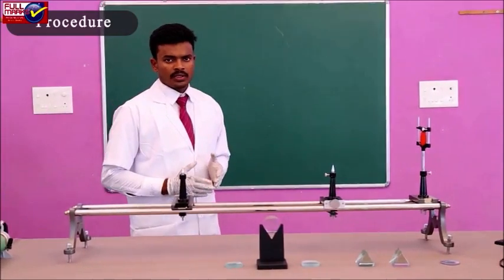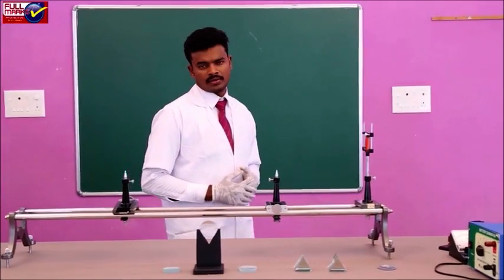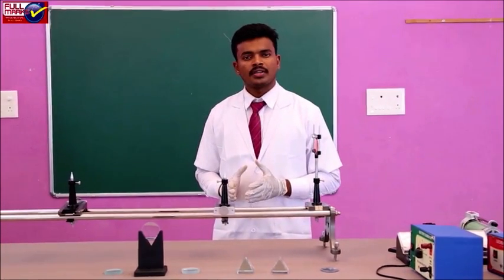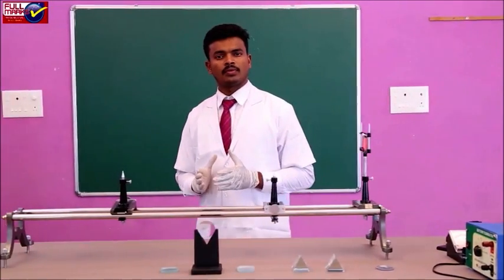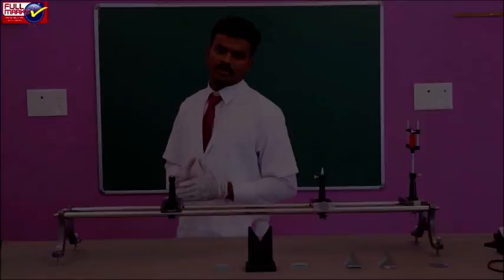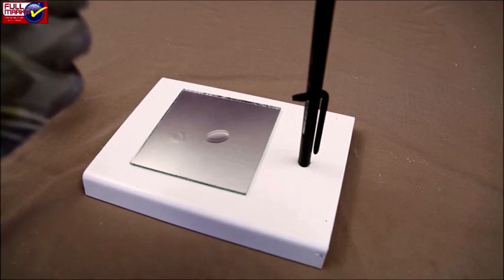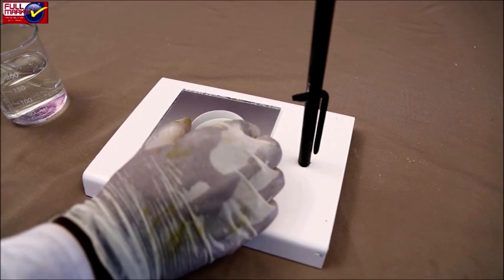Procedure: When a convex lens is placed on a plane mirror with its axis normal to the mirror, object and image formed both will be at the principal focus of the lens. When a liquid is put between the lens and the mirror, it forms a plano-concave lens.